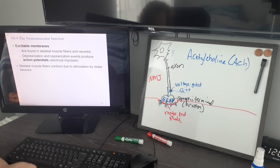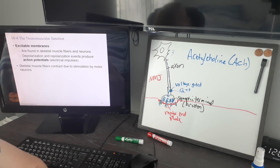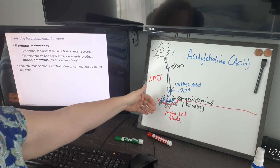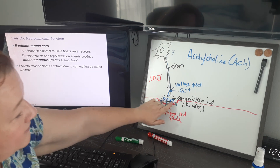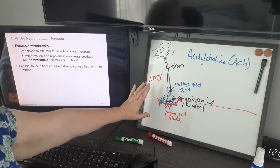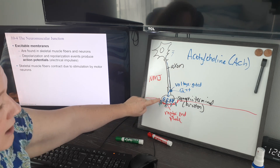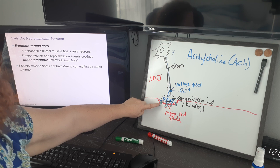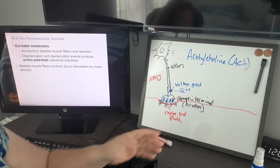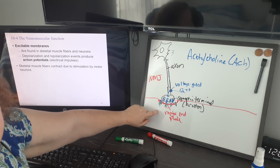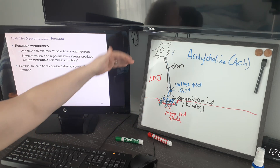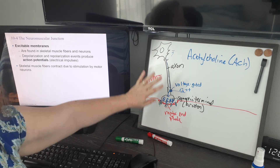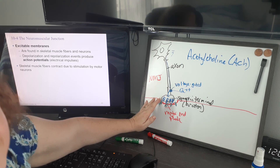The acetylcholine comes over and binds to its spot on the ligand-gated channels on the motor end plate. These ligand-gated channels are for sodium. Remember, the sodium-potassium pump pushed a whole bunch of sodium outside the muscle cell too, so there's a lot of sodium in that synaptic cleft. When the acetylcholine binds, the sodium channel opens, sodium comes into the muscle cell, and it makes the inside of the cell positive — creating a new electrical current, or action potential, in the muscle cell.